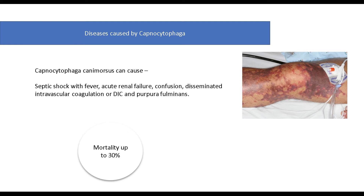Patients may have purpura fulminans due to occlusion of small and medium-sized blood vessels. There could be evidence of skin necrosis and gangrene. Septic shock is most common with Capnocytophaga canimorsus infection, but other species have also been reported to cause such disease. Septic shock due to Capnocytophaga can have a mortality of up to 30% even after treatment.